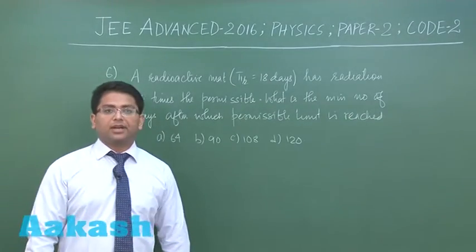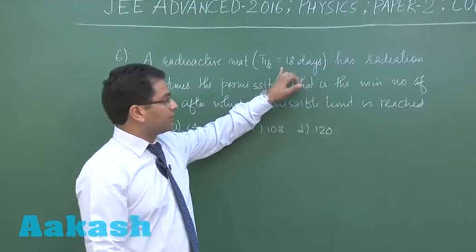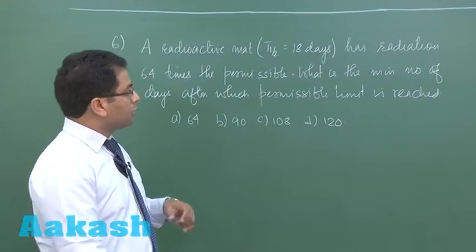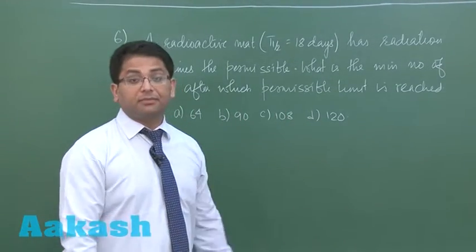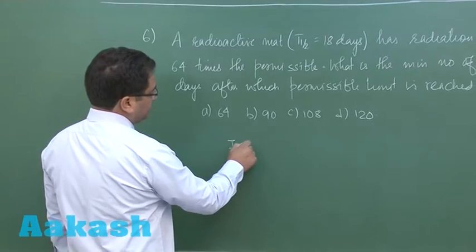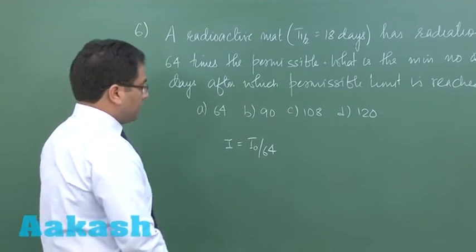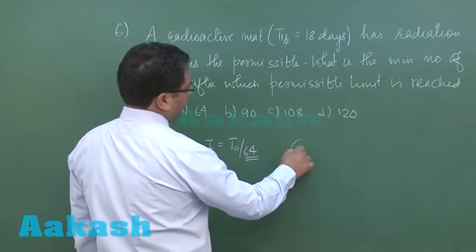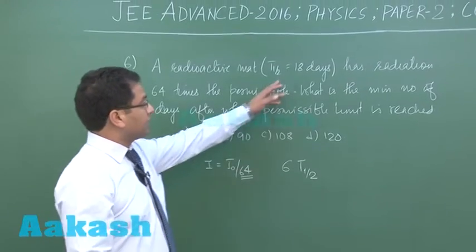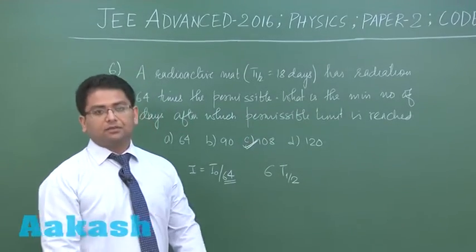Question number six is from radioactivity in modern physics. A radioactive material having half-life of 18 days has radiation 64 times the permissible limit. The minimum number of days after which the permissible limit is reached requires the intensity to reduce 64 times. Since 2 to the power six equals 64, six half-lives are needed, which is 6 × 18 = 108 days. So option C is the correct answer.